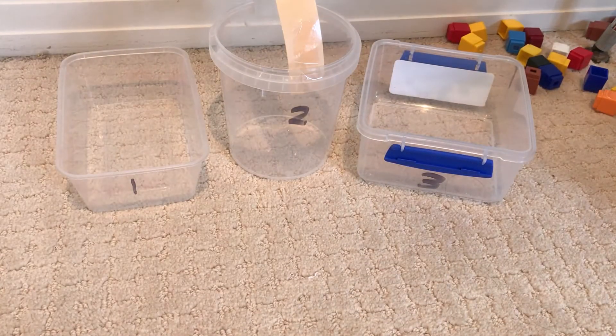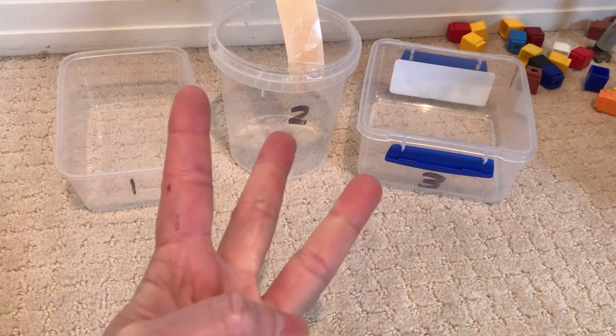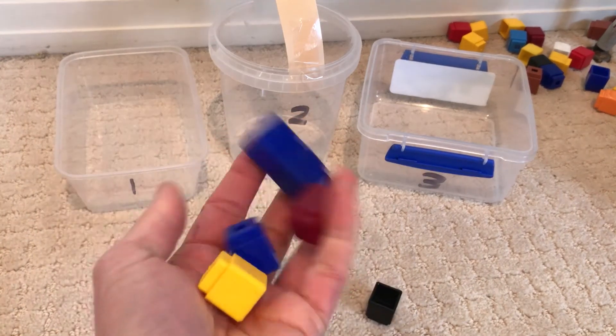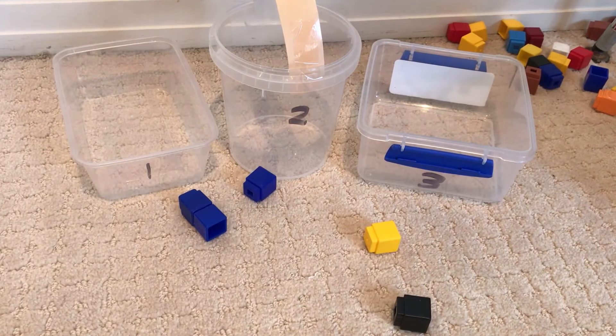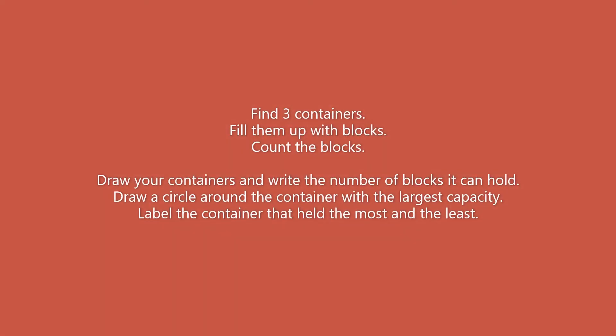Well done boys and girls. Now you're going to do this experiment at home too. Find 3 containers and fill them up with something large and count them. Find out which one has the biggest inside space. Fill them up with blocks, count the blocks, draw your containers and write the number of blocks each can hold. Draw a circle around the container with the largest capacity, and label the container that held the most and the least.